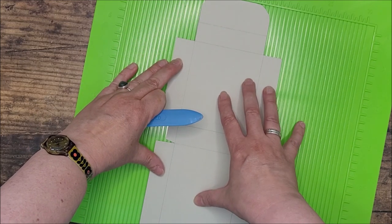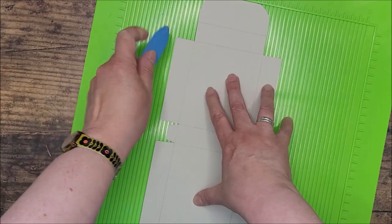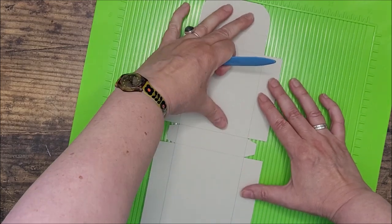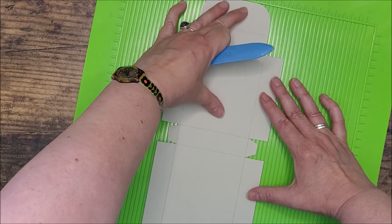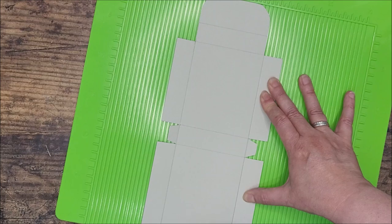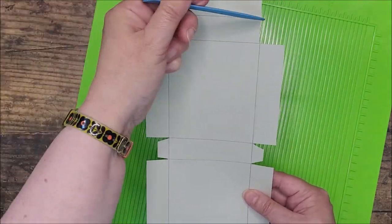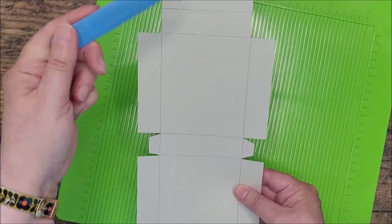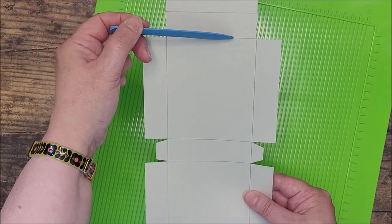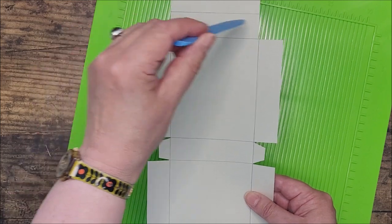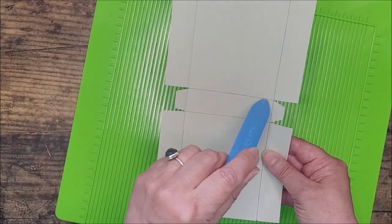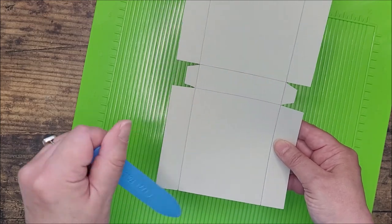I can make sure I do it nice and straight and score my line, and then I can move it slightly so this line on the other side is lined up with one of the grooves on the scoreboard, and I can score down that one. Now I need to score four lines across this template. The first one is four centimeters down, then the next one is 2.2 centimeters further down.